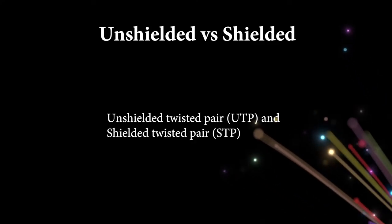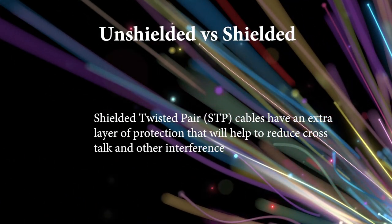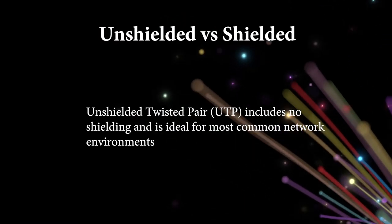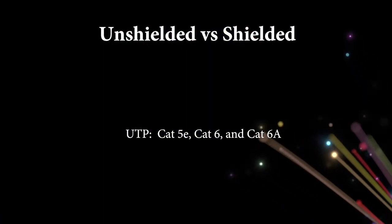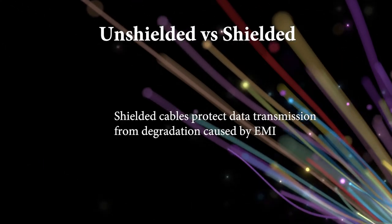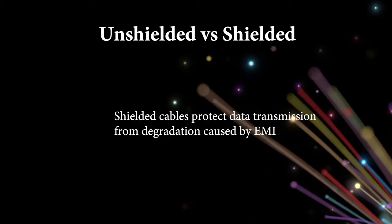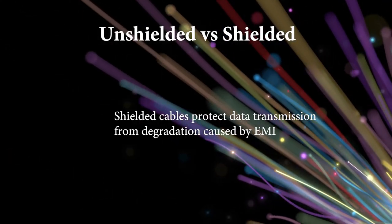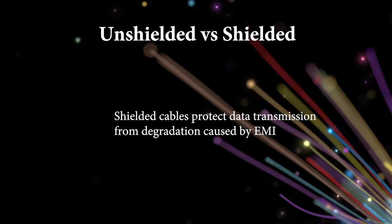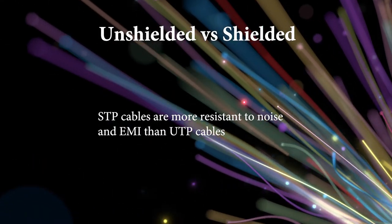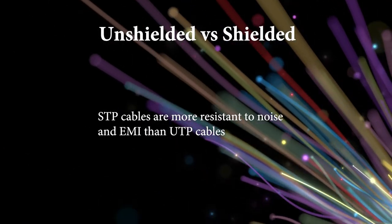Copper comes in unshielded and shielded forms. Shielded twisted pair cables have an extra layer of protection that will help to reduce crosstalk and other interference. Unshielded twisted pair includes no shielding and is ideal for most common network environments. The commonly used UTP copper cables are Cat 5E, Cat 6, and Cat 6A. Shielded cables are intended to protect data from degradation caused by electromagnetic interference, which is typical in data centers, industrial settings, offices, and other environments where electronic equipment is in frequent use. Shielded cable has a better capacity to resist noise and electromagnetic interference than unshielded pair cable and is generally reserved for networking environments with higher frequencies.